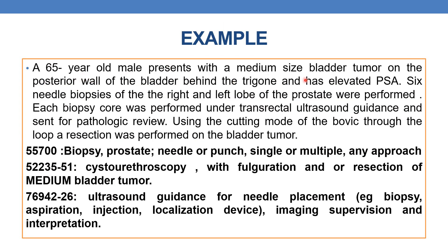Now let us see an example. A 65-year-old male presents with a medium-size bladder tumor on the posterior wall of the bladder behind the trigone and has elevated PSA. Six needle biopsies of the right and left lobe of the prostate were performed. Each biopsy core was performed under transrectal ultrasound guidance and sent for pathological review. A resection was also performed on the bladder tumor. So the first CPT is 55700 — biopsy, prostate, needle or punch, single or multiple, any approach.